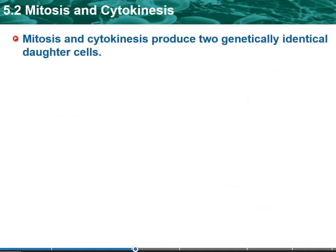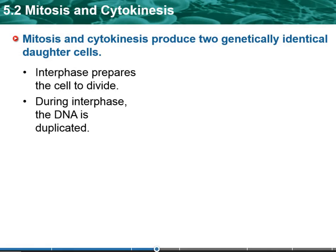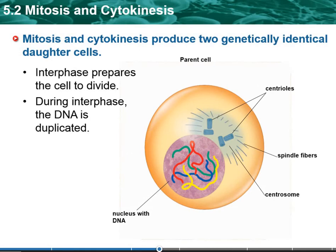Mitosis and cytokinesis produce two genetically identical body cells. Interphase is not part of mitosis. Interphase, again, was the G1, S, and G2 phase of the cell's life, so it's going to prepare itself to divide. During interphase, the DNA is going to be duplicated. You've got the parent cell — this is going to be what one would look like late in interphase. You're going to start to see the spindle fibers and centrioles.